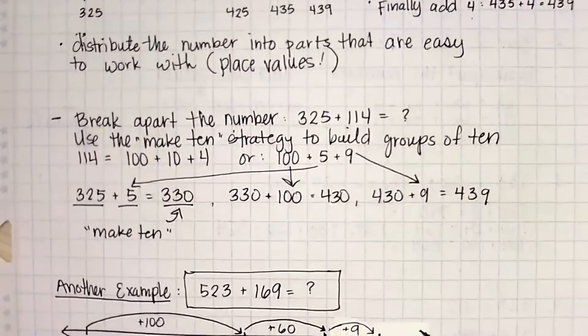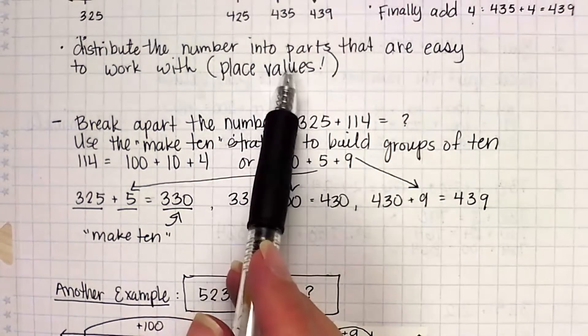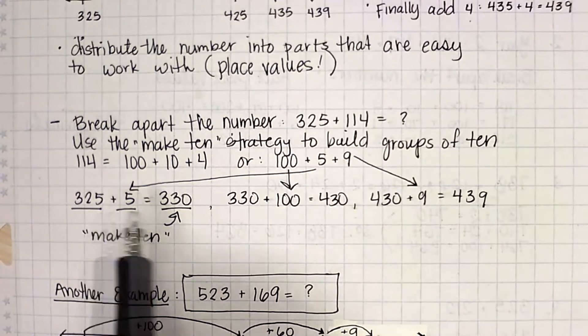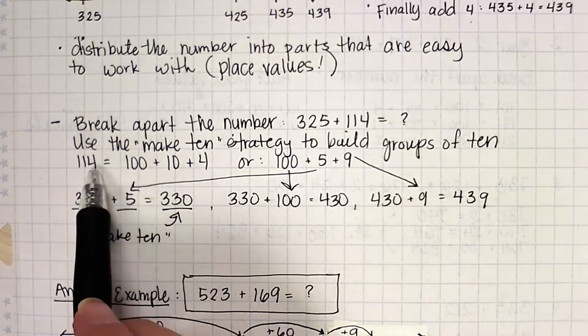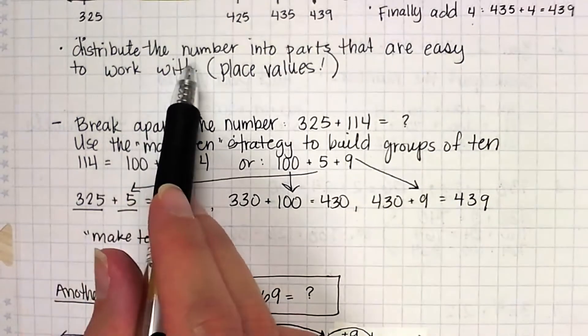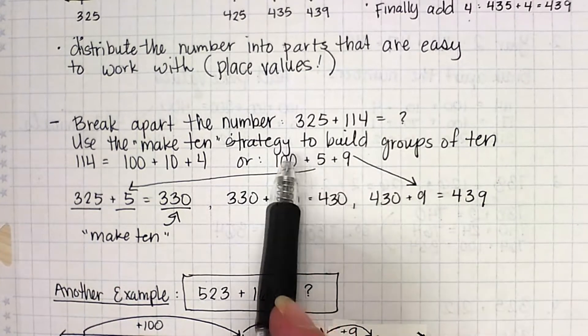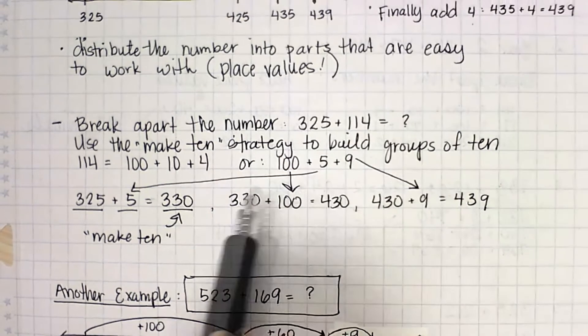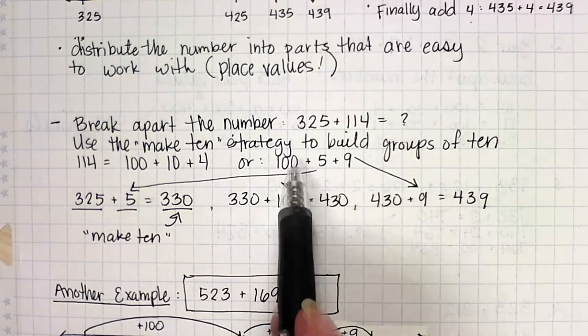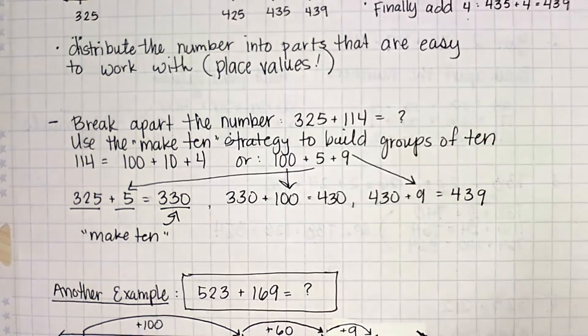Now, when we break apart a number to use the make 10 strategy, we're not working with place values anymore. We're trying to make groups of tens or hundreds that are easy for us to work with. So 325 if I'm still working with my same numbers. With this strategy, we're going to break it up into 5 and 109. So 325 plus 5 gave us a 330. So we use that 5. 330 plus the 100 gave us 430. 430 plus 9 gave us a 439.